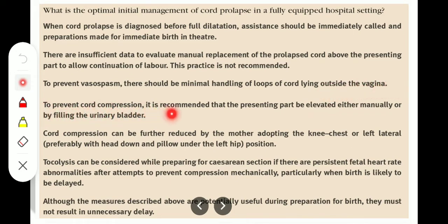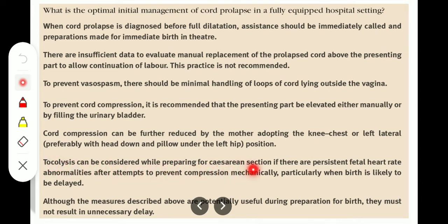To prevent cord compression, it is recommended that the presenting part be elevated either manually or by filling the urinary bladder. Cord compression can be further reduced by the mother adopting the knee-chest or left lateral position, preferably with the head down and a pillow under the left hip. Tocolysis can be considered while preparing for cesarean section if there are persistent fetal heart rate abnormalities after attempts to prevent compression mechanically, particularly when birth is likely to be delayed. Although the measures described are potentially useful during preparation for birth, they should not result in unnecessary delay.